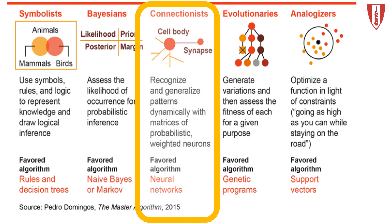Connectionists use neural networks and are influenced by neuroscience. They rely on deep learning technologies including CNN and RNN — that is, convolutional neural networks and recurrent neural networks — as well as deep reinforcement learning.